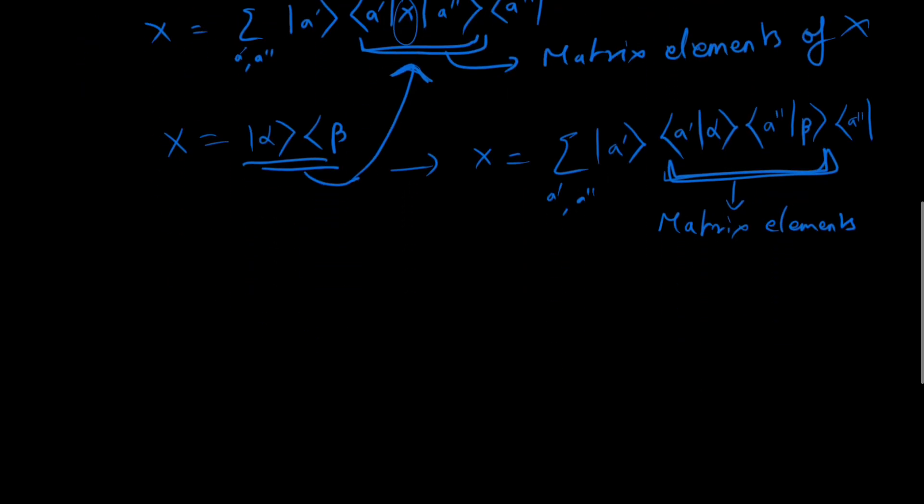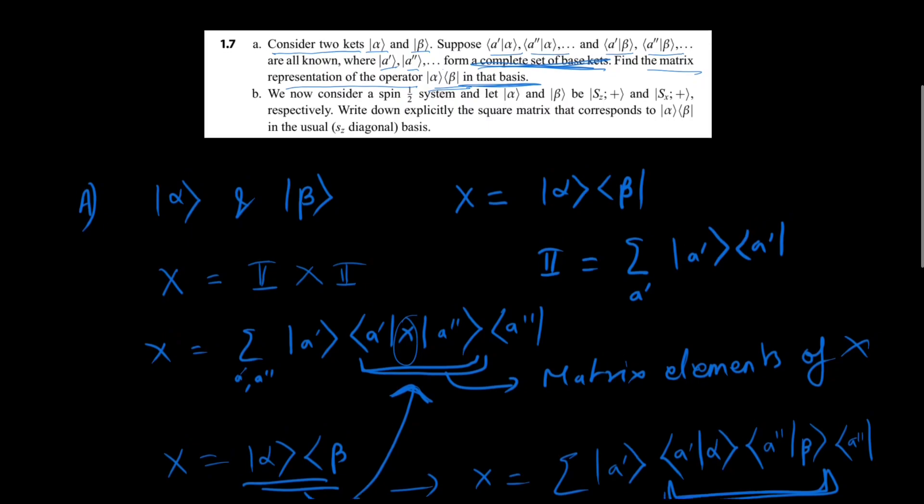So if this is an i cross j matrix, the matrix element xij we can write as a_j, a_i alpha, and a_j beta. These are our matrix elements. Now, let's read the second question.